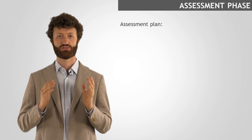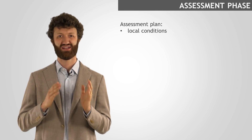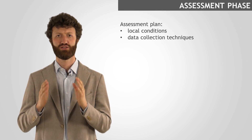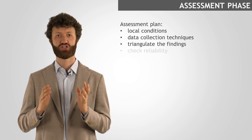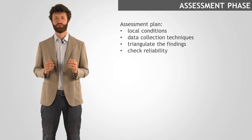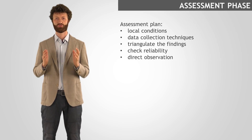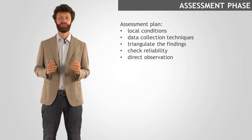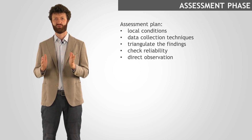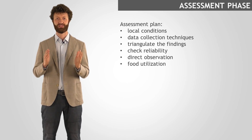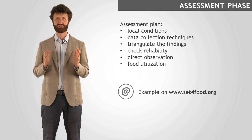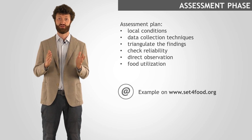First of all, the process has to be planned starting from the assessment phase. It has to consider local conditions, and different data collection techniques should be applied in order to triangulate the findings and check their reliability. Direct observation should always be included. The assessment will include one or more aspects of food utilization and will primarily identify the needs. On the Set for Food website, an example of how findings can be summarized to fill the DSS is provided.